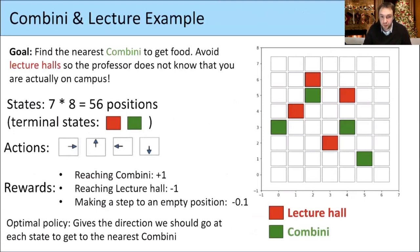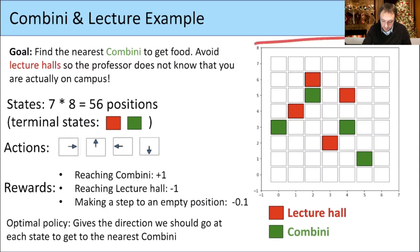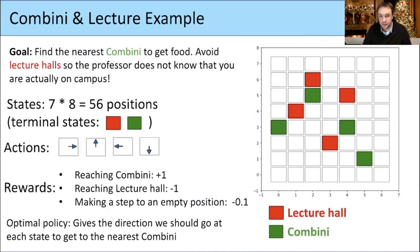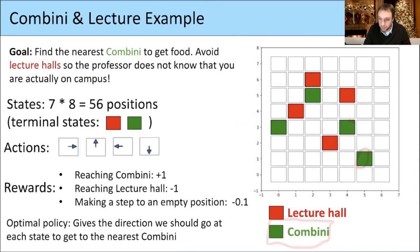Let's do an explicit example with numbers and try to understand this function Q. We had this Konbini lecture example. The setup is that we are on a campus with different positions, and the different states are the positions on the campus — 56 positions in this case. There are some special states: the green parts are Konbinis and the red parts are lecture halls. There are four possible actions: going right, up, left, and down.